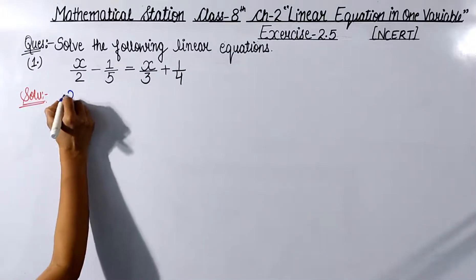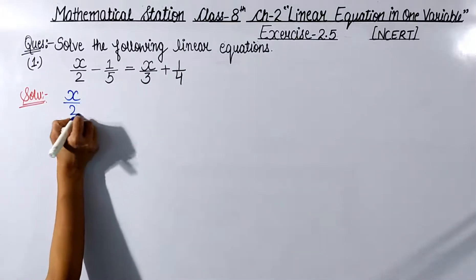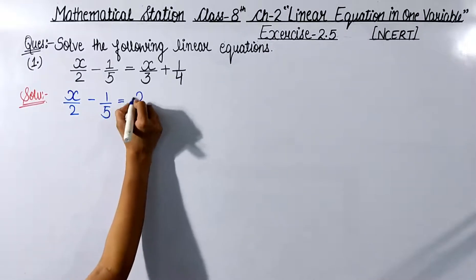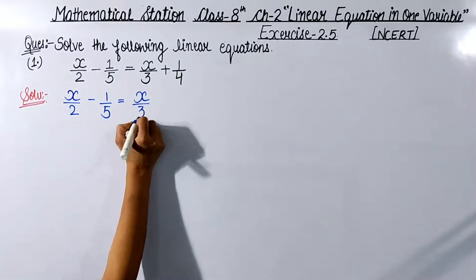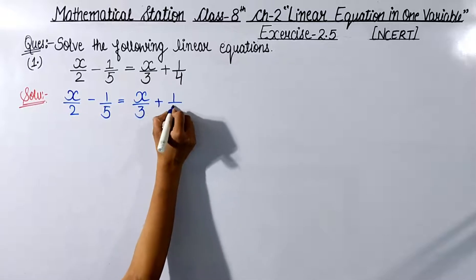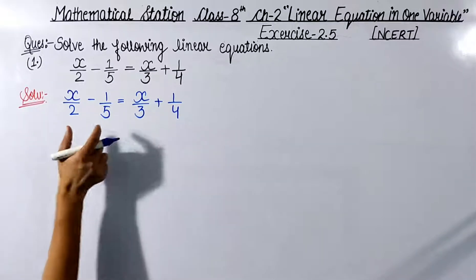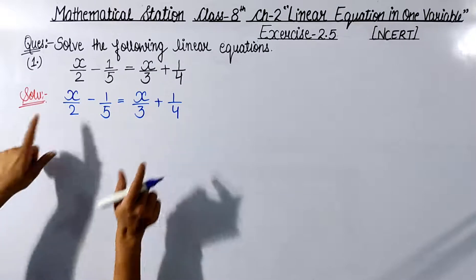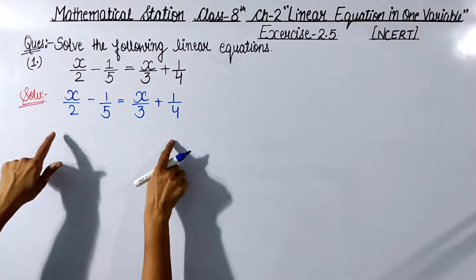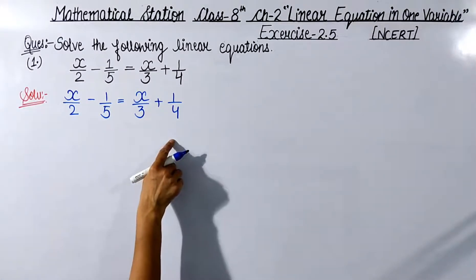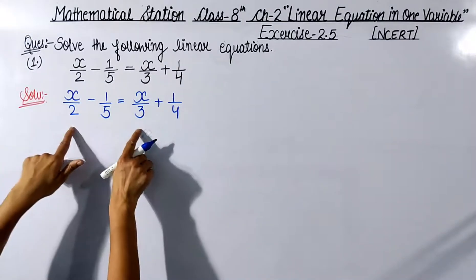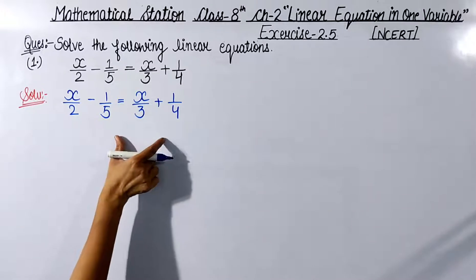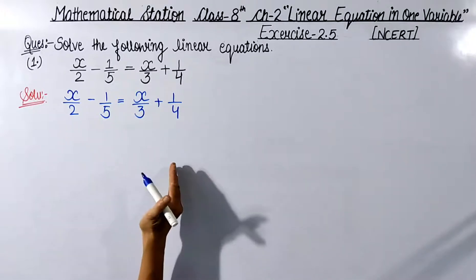The equation is: x upon 2 minus 1 upon 5 is equals to x upon 3 plus 1 upon 4. In this equation there are LHS and RHS, and both sides have the same variable x. The first step is that we have to shift all the variable terms to one side, and all the constant terms to the other side.